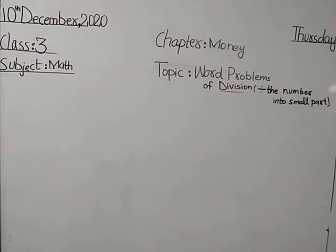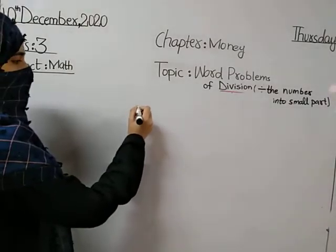Division divides the number or objects. Object is, for example, chocolate, for example cloth. It divides all objects, all things, all numbers into small parts. For example, I have six stars.